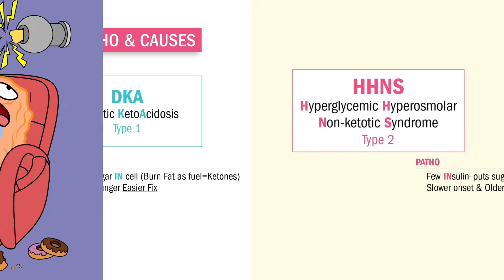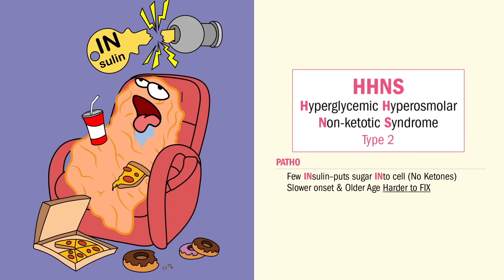Now type 2 — we have few insulins, barely working. So HHNS, or just HHS, let the name help you. Think: dehydrated blood — huge dehydration here — and non-ketonic, meaning we have no ketones. S is for syndrome.